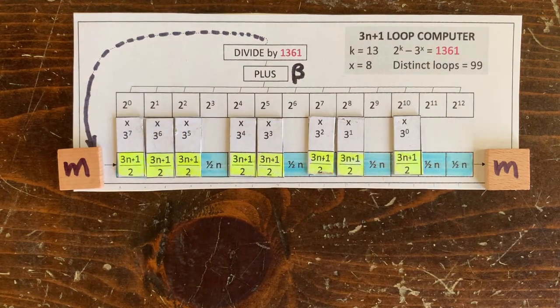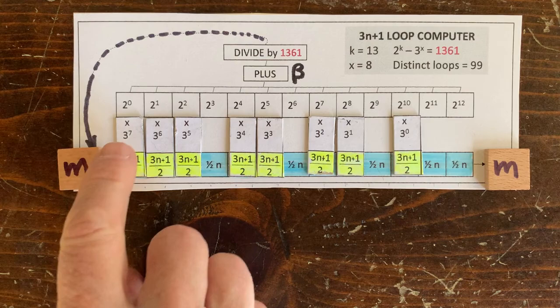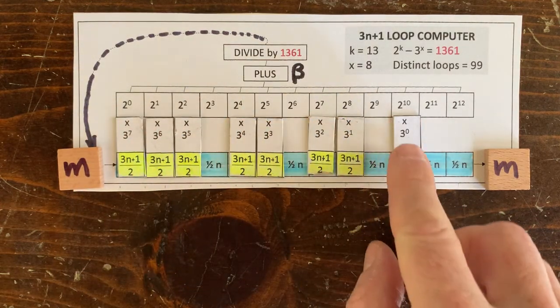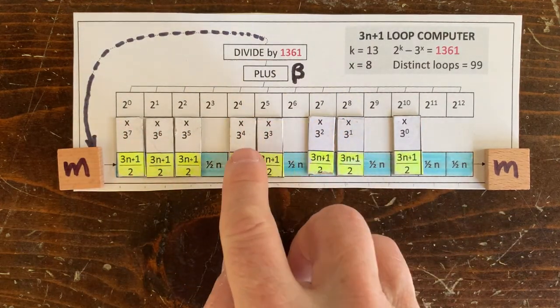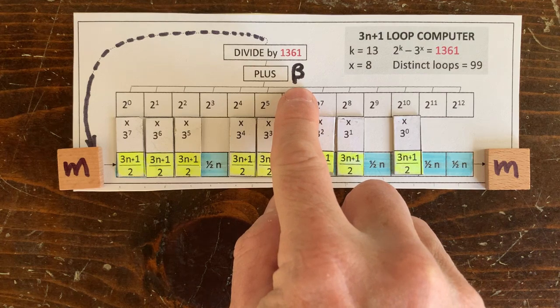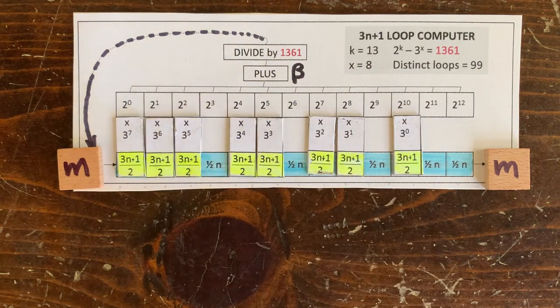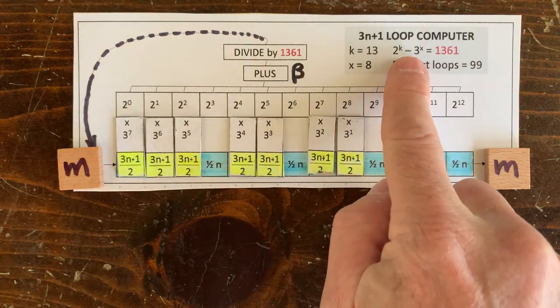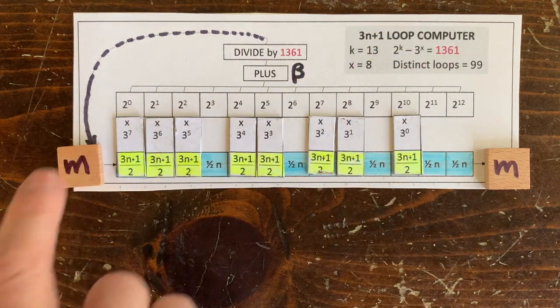So this computer tells you how to solve for m. You multiply all these increasing powers of 2 with all these decreasing powers of 3, and you sum up all those products. We call that beta. Then divide beta by 2 to the 13th minus 3 to the 8th or 1361. And that's m.